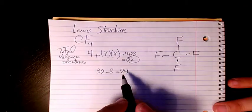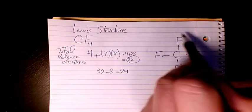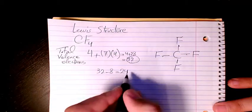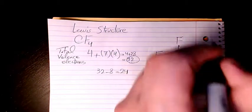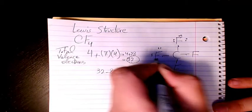You have 24 remaining number of electrons, so this 24 we need to distribute it here. So we have 24 divided by 4, we have 6. So we have 6 electrons around each fluorine.